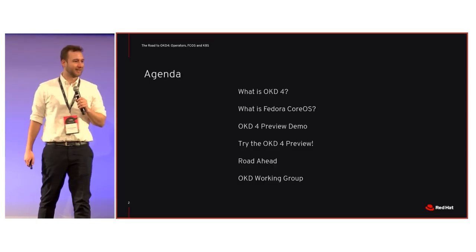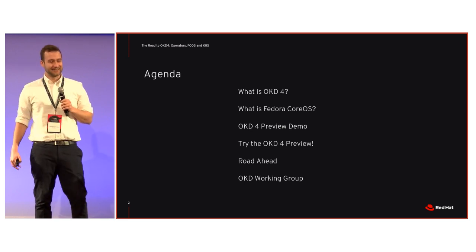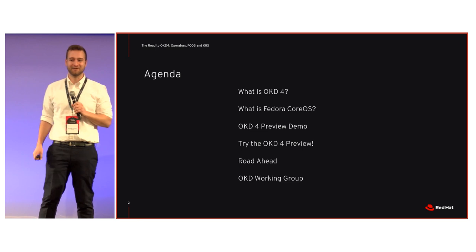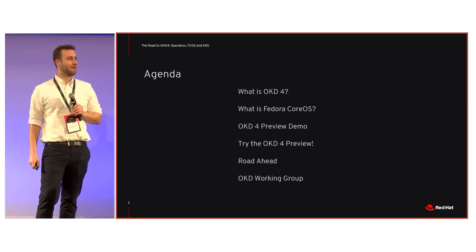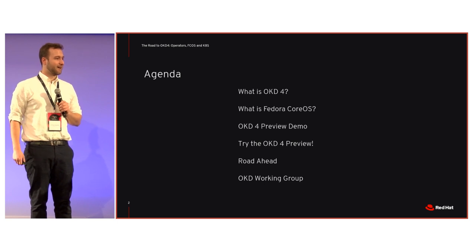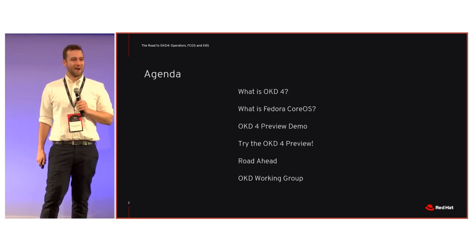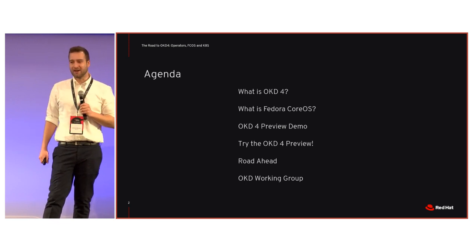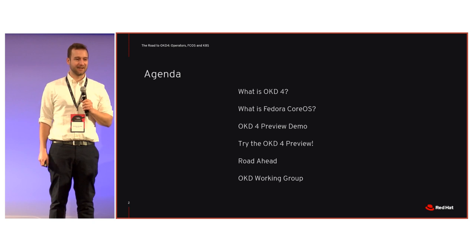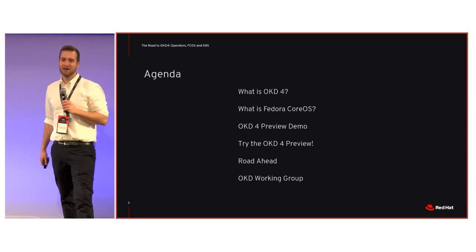Let's have a quick look at the agenda. What is OKD 4? That will be the first point. Then I'll quickly talk about FCOS, Fedora CoreOS. We'll have a very short preview demo and then I'll pitch to you that you should try out OKD 4. Then we'll have a quick look at the road ahead, the roadmap and what's next in OKD.